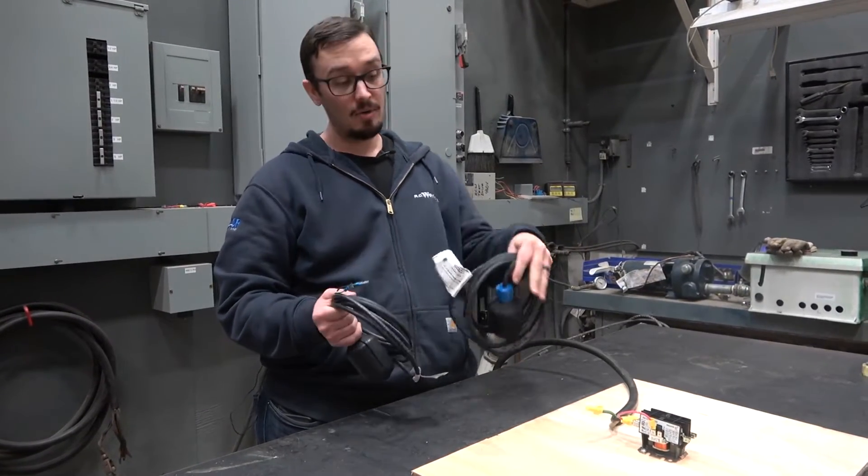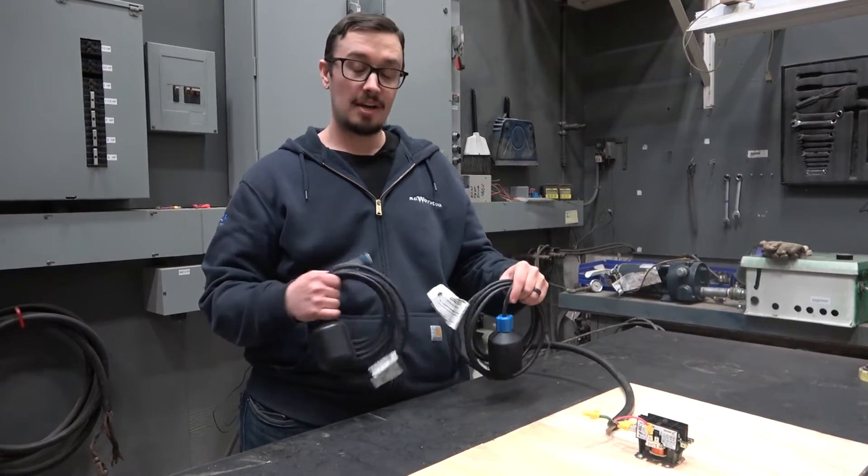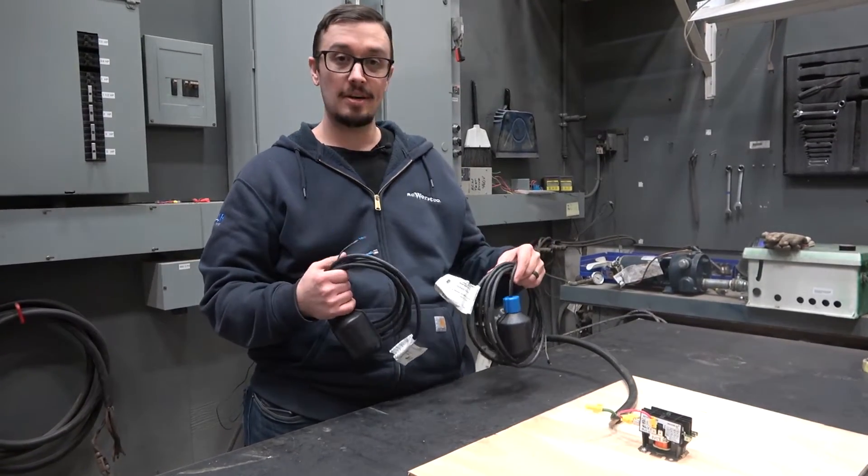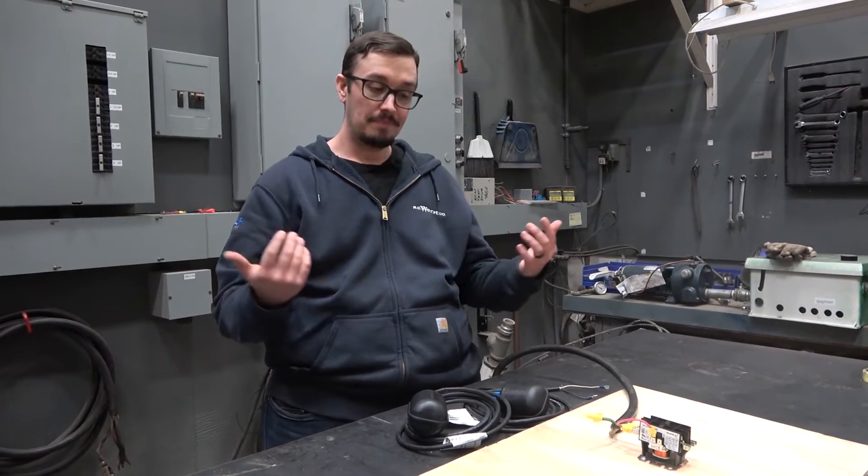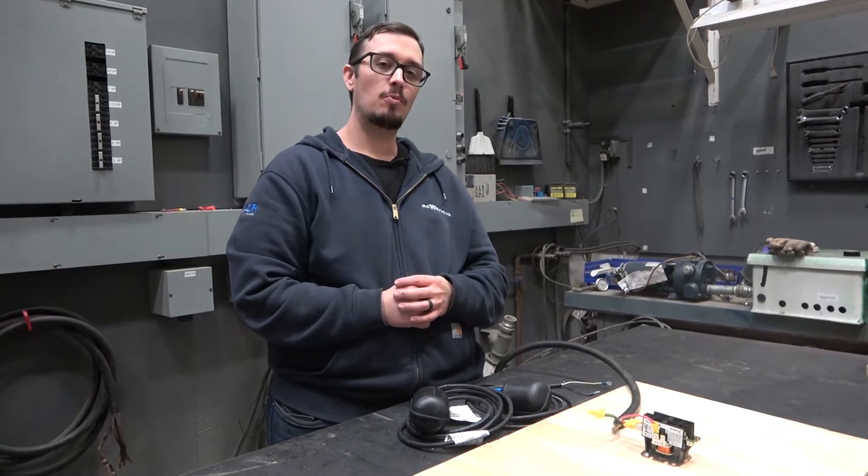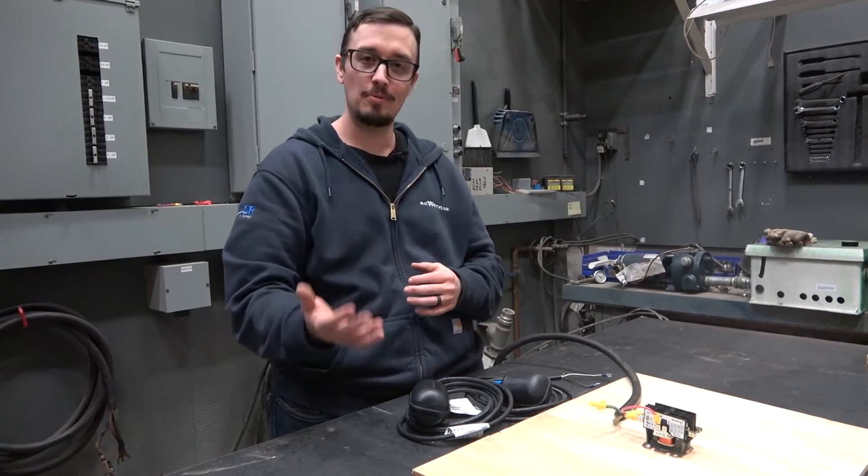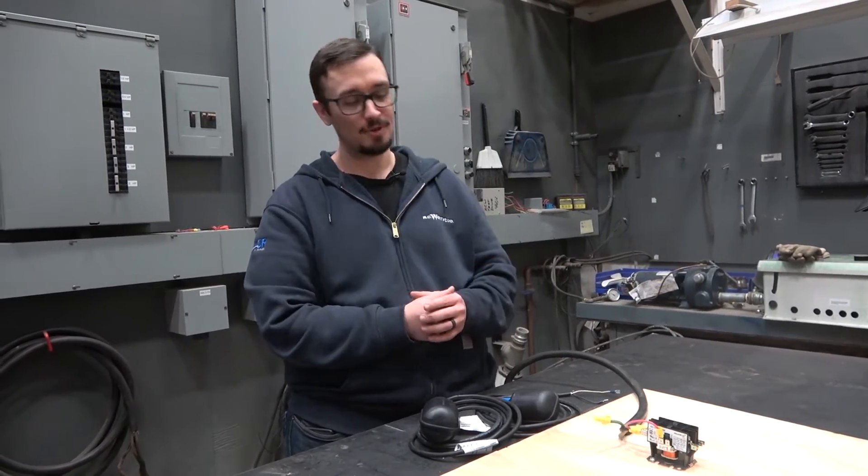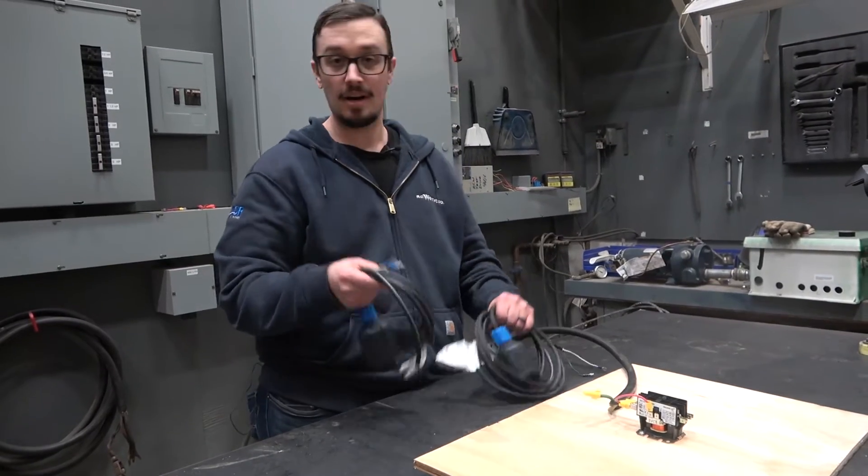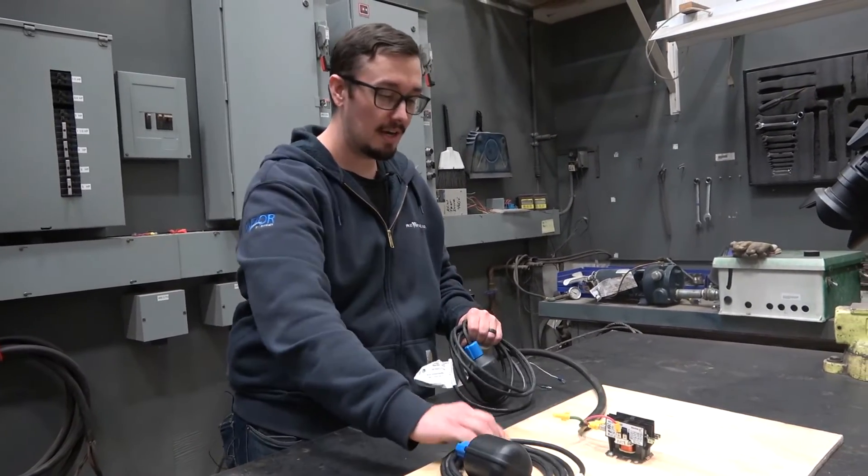We're going to be using this contactor as basically a holding circuit relay to allow this to operate. This is kind of known as a farmer's method, or maybe not the most professional way to accomplish this particular task, but hey, if it works, get it done. So a good way to show you how to get this going in a double float or two float scenario.